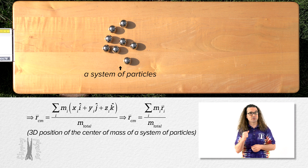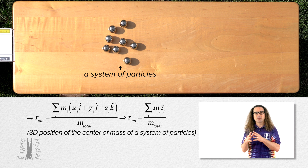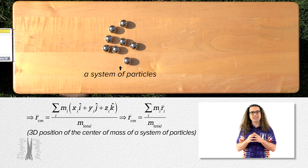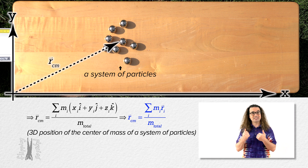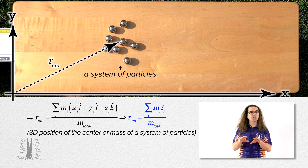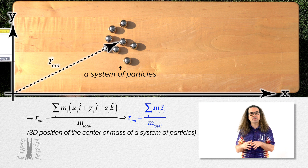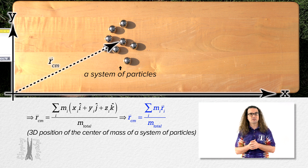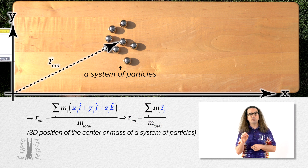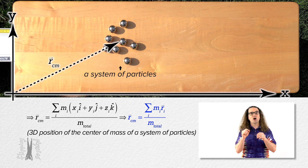When we have a system of particles, we can describe the location of its center of mass in a coordinate plane using this single equation. I am only showing this in two-dimensional space; however, you can see how this would also be applicable in three-dimensional space. To be clear, because the r position vector describes the location of a single particle in three-dimensional space, the r center of mass position vector describes the location of the center of mass of a system of particles in three-dimensional space.